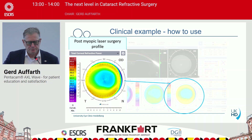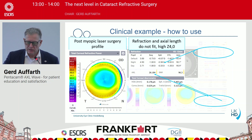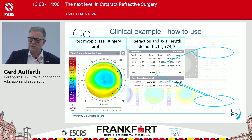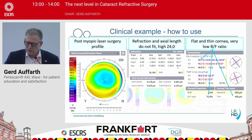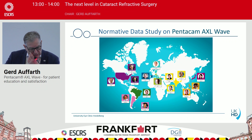Here is a post-myopic laser profile. The machine already realizes this is a long eye but has a normal refraction. The patient doesn't always tell you that. The technician might write down 'laser treatment,' but it could be laser treatment of the cornea or a retinal hole. For the patient, everything you do in the eye is laser surgery, regardless of what you do. But if you look at the machinery, you can see — flat and thin cornea, and the back-front ratio is fairly low, which tells you something has been done with the cornea.